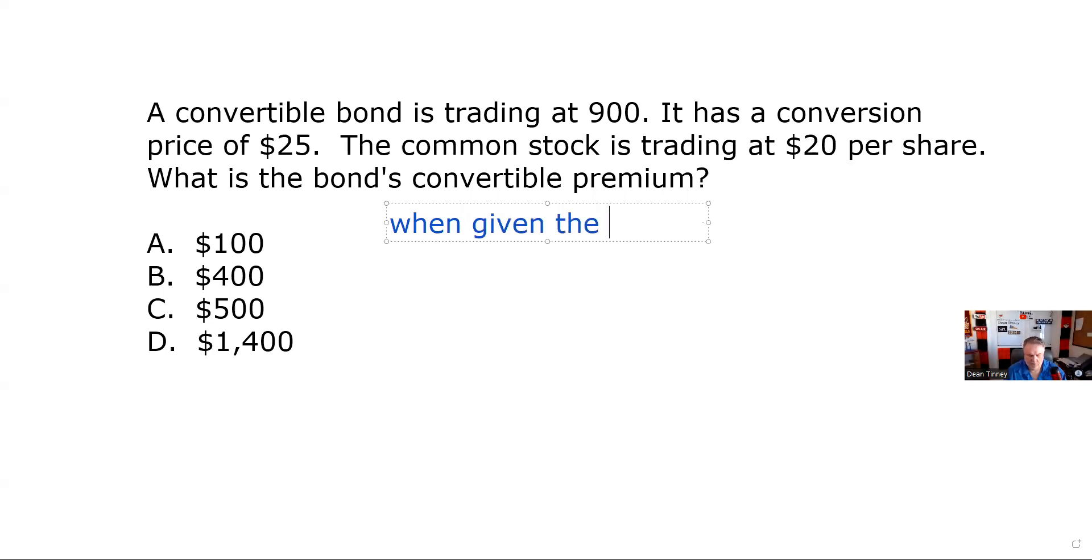So when given the conversion price, we need to establish the conversion ratio. If we don't do that right off the bat, we're going to have troubles down the road in the question. So that's step number one whenever we get a convertible question. Maybe you get a decent draw and they just tell you what the conversion ratio is, but I wouldn't count on it.